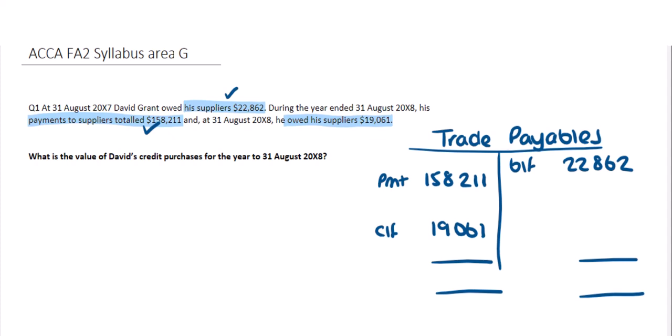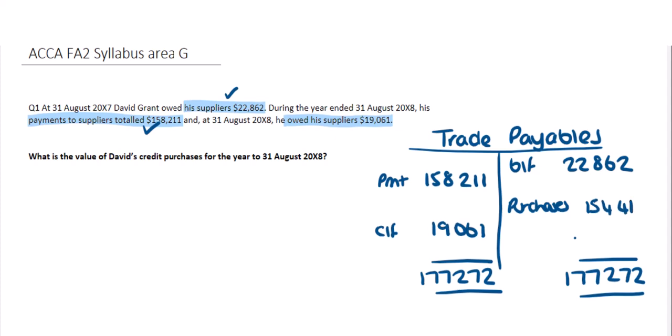Now I can close the T account and work out the biggest side, which is the left-hand side. Totalling up the payments and the closing amounts owed to suppliers gives us $177,272. The other side needs to equal the same, so $177,272 here. The missing figure must be my purchases. The transaction for purchases is to debit purchases and credit trade payables, so the balancing figure on the credit side is $154,410.